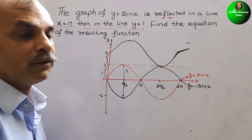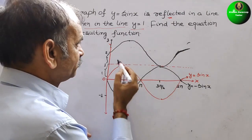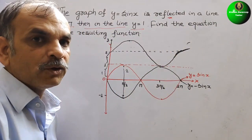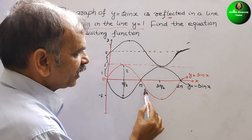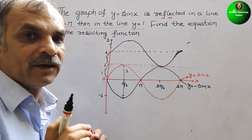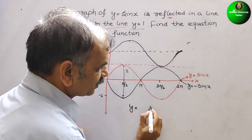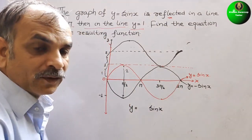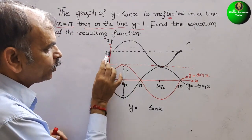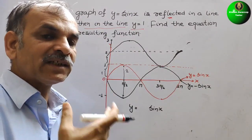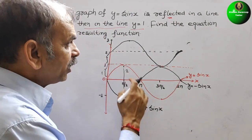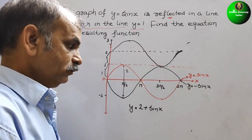So this is the resulting graph. You can see this new graph is just like the original sine wave — that is the red color graph. The graph has shifted from 0 to 1 to 2, meaning it is shifted two units in the y-axis. So the new equation will be y equals 2 plus sin x. That is how we draw and explain it.